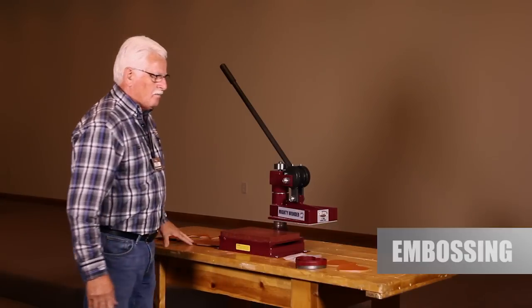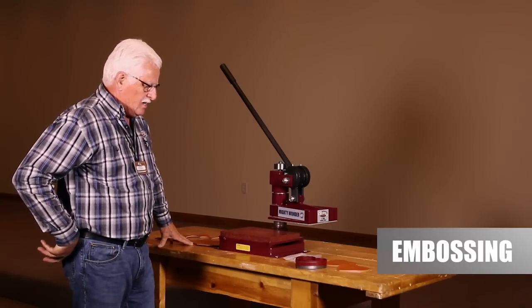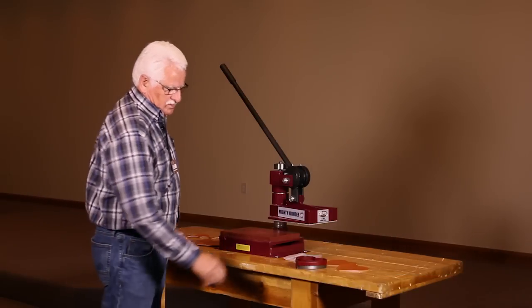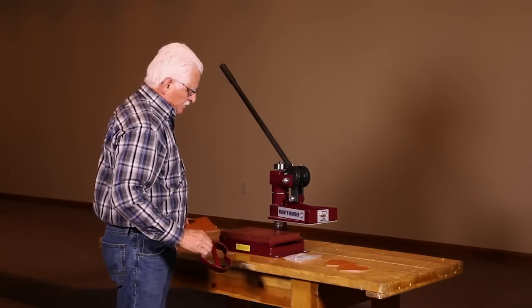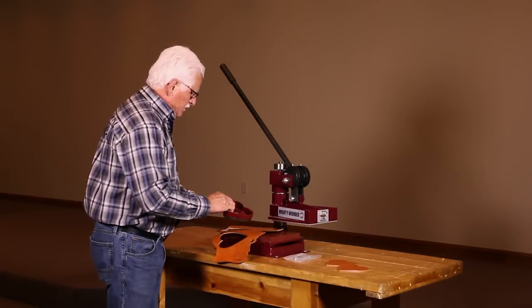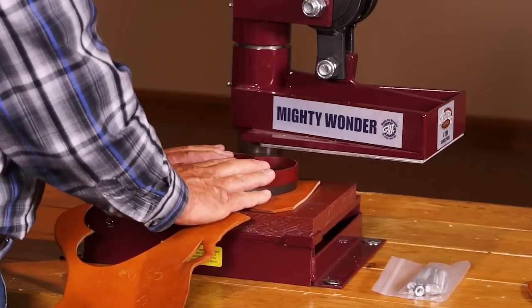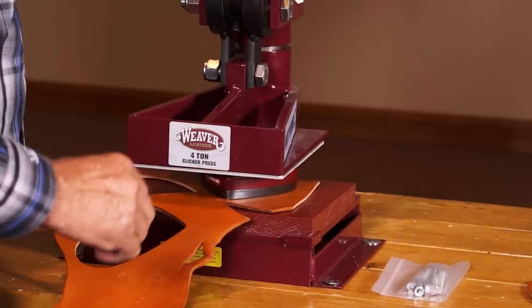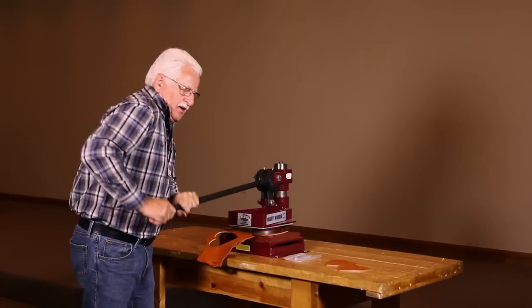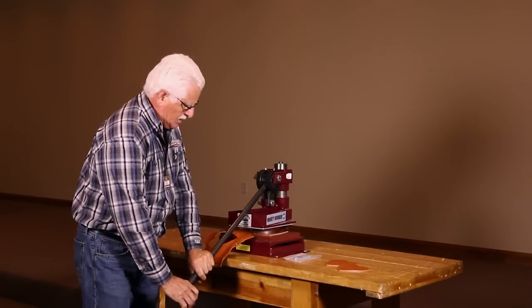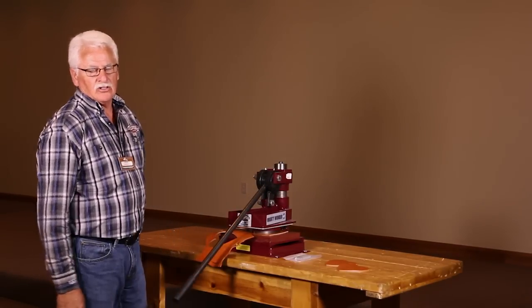The other thing people have done with this machine is embossing. That's simply taking leather, placing it underneath there along with your embossing die. We'll pretend that's what this is. Bring it down and over center click and the handle will lock into place.